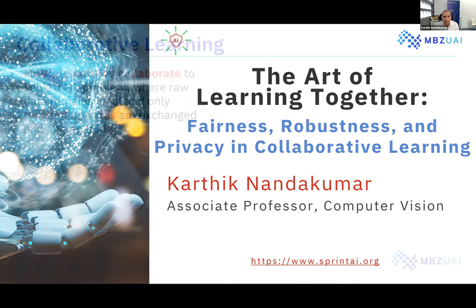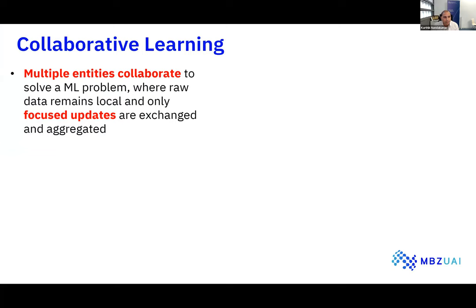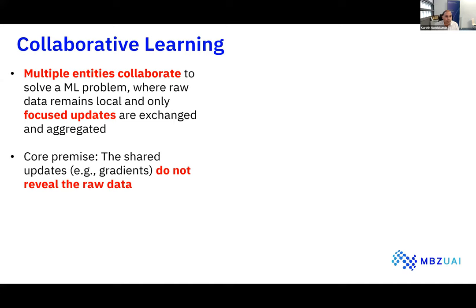When you talk about federated learning or collaborative learning, the whole idea is to allow multiple entities to collaborate in order to solve machine learning problems. The key is to allow this collaboration while keeping the raw data locally and exchanging only some kind of focused updates which are then aggregated. The core premise is that the shared updates — things like gradients — do not reveal the raw data, so privacy is one of the key concerns.